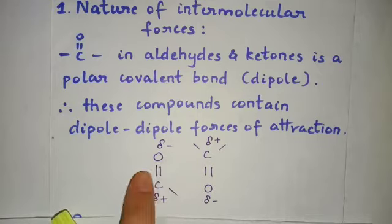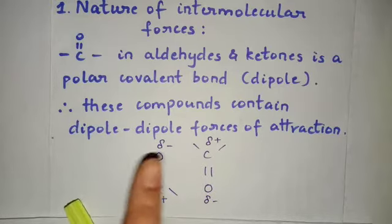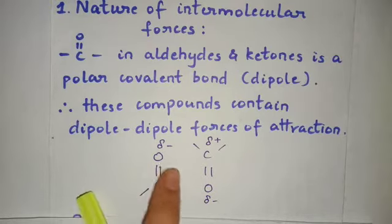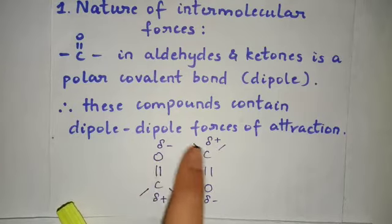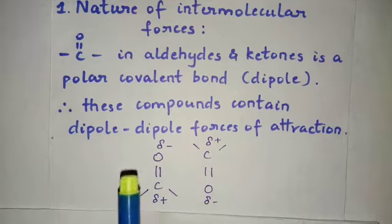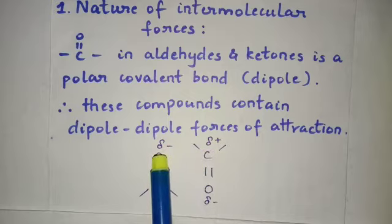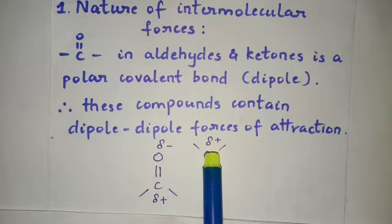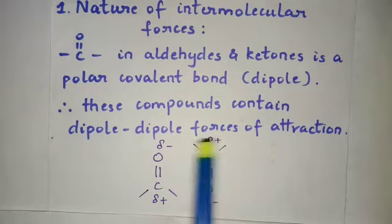Assume these to be two different compounds. They are having dipole-dipole attraction between them. The molecules orient in such a way that the oppositely charged or oppositely polarized atoms will face each other. Both are carbonyl groups, but because of the electrostatic forces of attraction, the partial negative charge is facing the partial positive. These are the type of intermolecular forces in aldehydes and ketones.